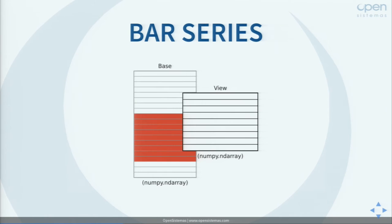The bar series are updated in real-time. To avoid full memory copies on each update, we use a view of a NumPy array — a base array or buffer — which is what we update with new bars. If a new bar comes, we update the base array and then simply change the view, which is much faster than performing a full memory copy.